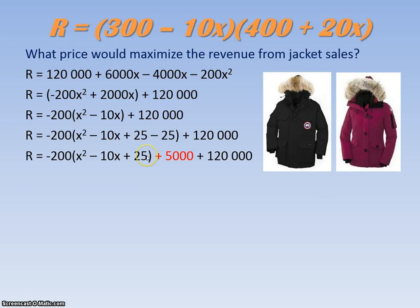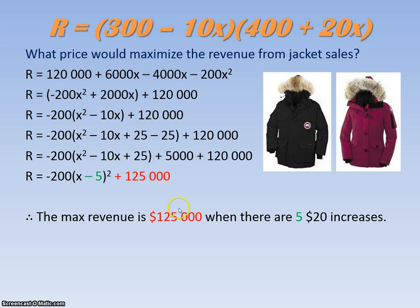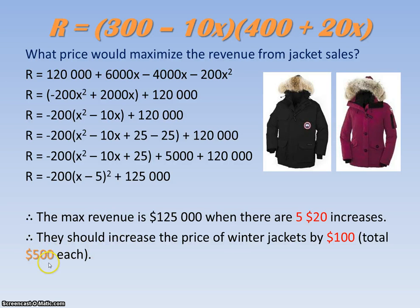Now I can factor this down into two identical brackets, written as squared. You can get the 5 by splitting 10 in half or by square rooting 25, and the symbols match. Adding 5,000 and 120,000 gives $125,000. This represents our maximum revenue. The X value of positive 5 means you apply 5 increases of $20 — that's $100 added onto the $400 jacket — so the best price is $500 each, giving a maximum revenue of $125,000.